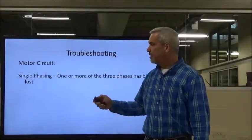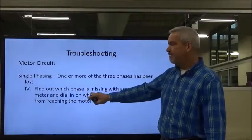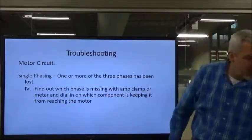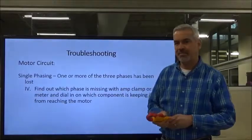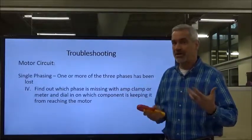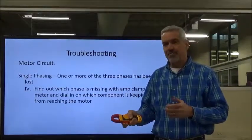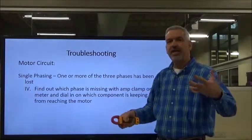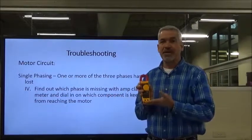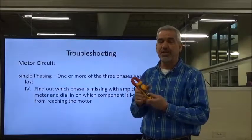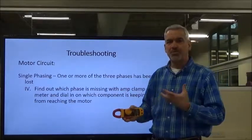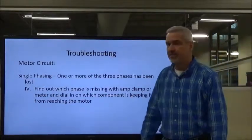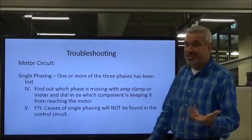Find out which phase is missing with an amp clamp — that's an easy way to do it. If you've got a single-phasing motor heating up quickly, be ready with your amp clamp. Have the operator start the motor and very quickly go between L1, L2, and L3 to find out which phase is missing — the missing phase won't pull any current, and the other two will actually pull more current than they should. You'll be able to very quickly clamp around and find the missing phase.